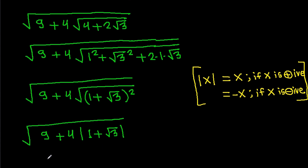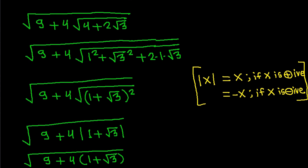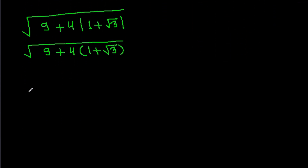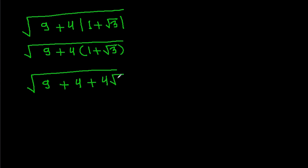So it becomes the square root of 9 plus 4 times (1 + √3), which equals the square root of 9 plus 4 plus 4√3, and that is the square root of 13 plus 4 times √3.